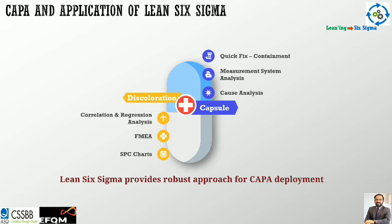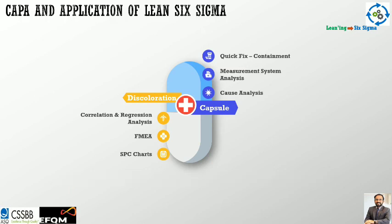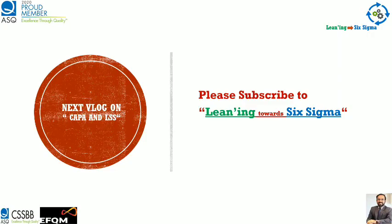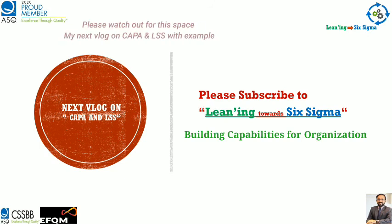There is a synergy between CAPA and the application of Lean Six Sigma. I am going to deal with this in greater detail in my next blog with an example — the discoloration of a capsule — picking what the quick fix could be, what the measurement system analysis could be, what the causes are, etc. The idea of presenting this is that Lean Six Sigma helps you to effectively deploy the CAPA procedure. This is just an introductory blog; please watch this space for my next blog on CAPA and Lean Six Sigma with a case study.